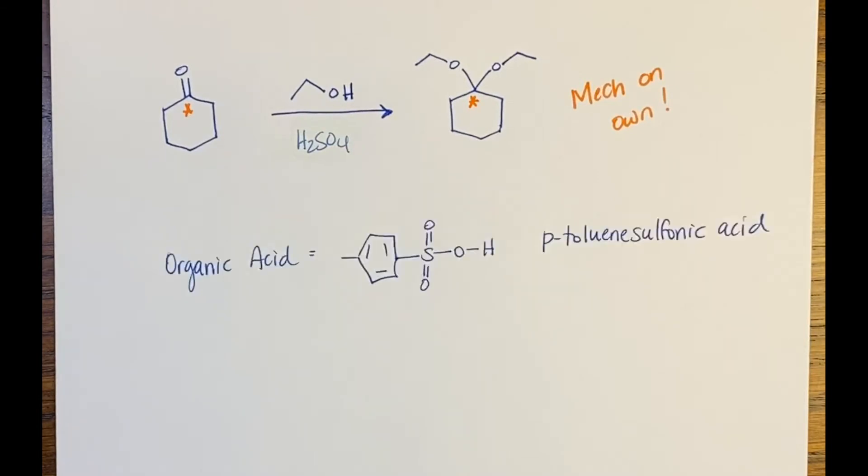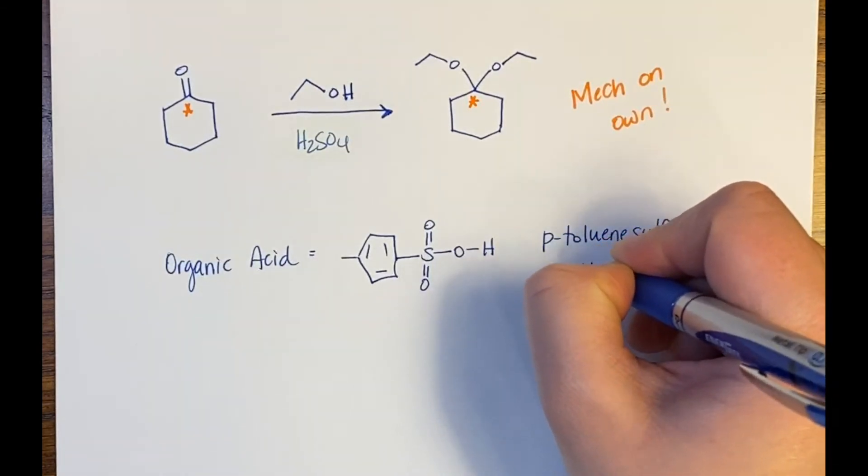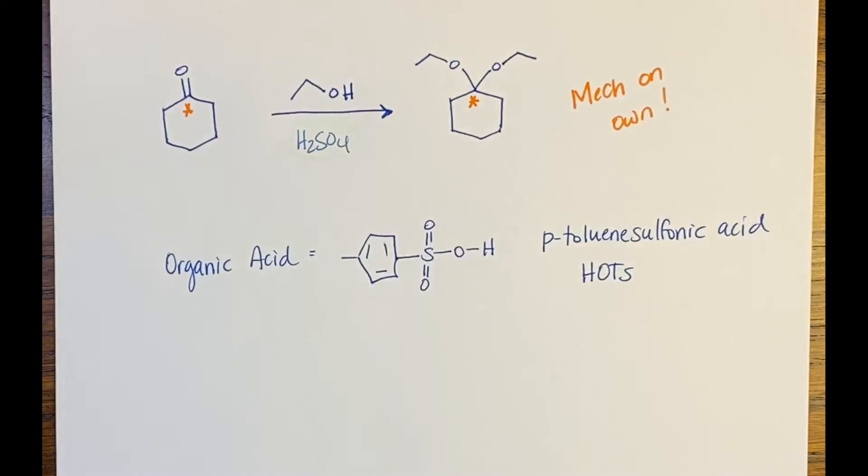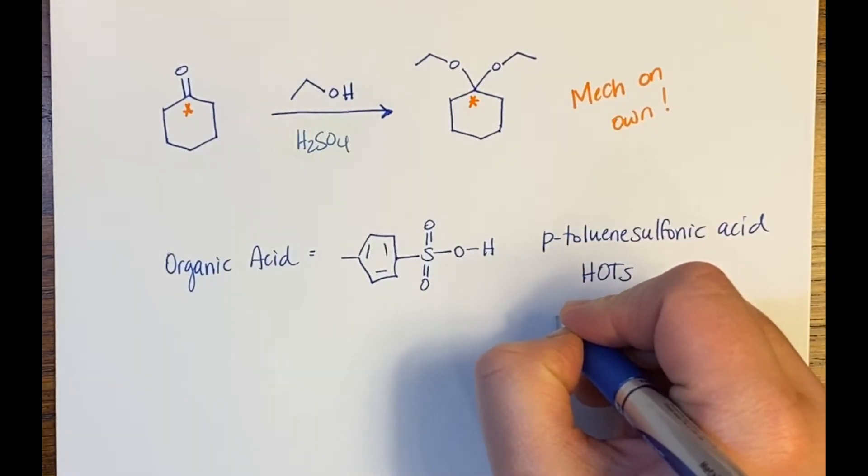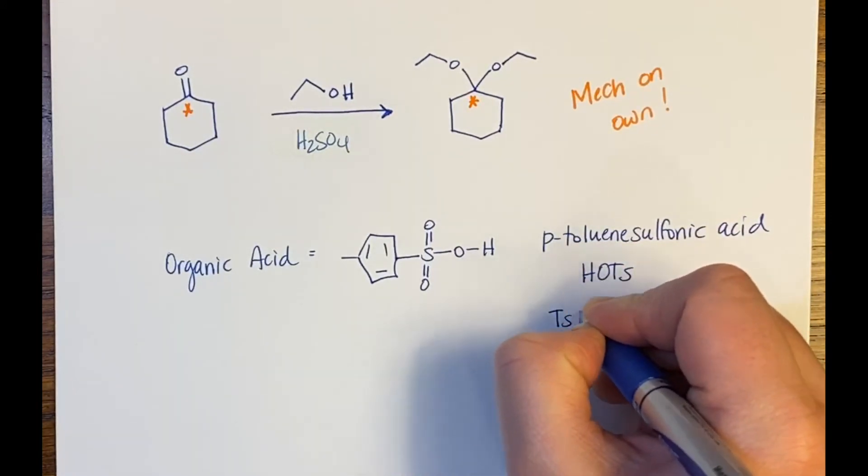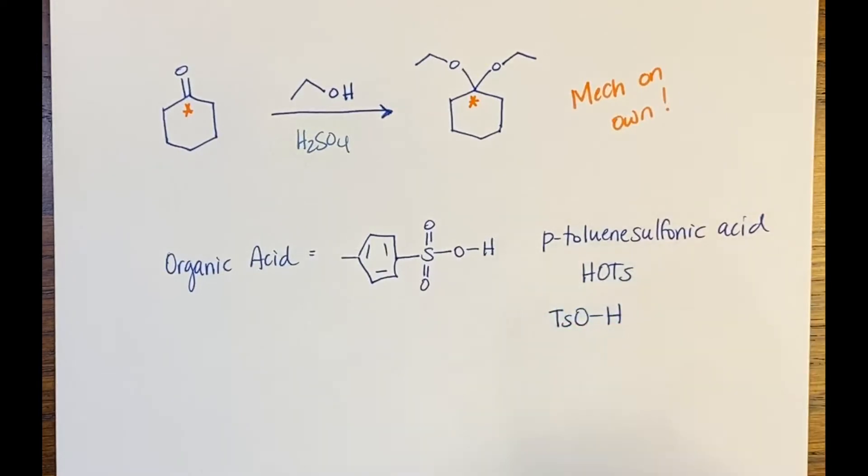Sometimes in these reactions, we use an organic acid that's called p-toluenesulfonic acid. And it looks like this. And this is a compound that is an organic acid. It's used a lot in organic reactions. It has a little bit better solubility than sulfuric acid. And sometimes this acid is called HOTS. Or we can show it with the proton like that.